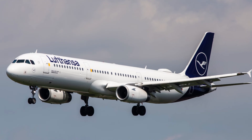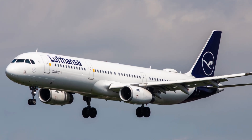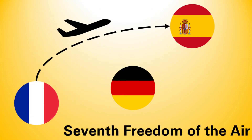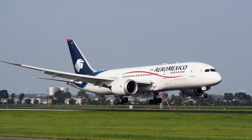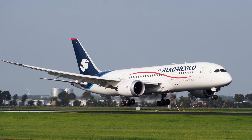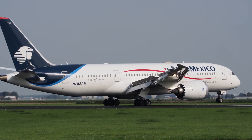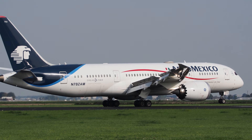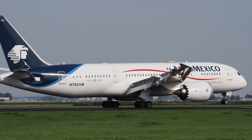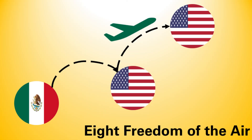The seventh freedom grants an airline the right to operate a flight between two foreign countries — for example, a German airline operating a flight from France to Spain. The eighth freedom allows an airline to operate a domestic leg in a foreign country, as long as that leg is part of a flight that originates or ends in the home country of the airline. As an example, a Mexican airline operating a flight from Mexico City to Dallas with a stop in Houston.